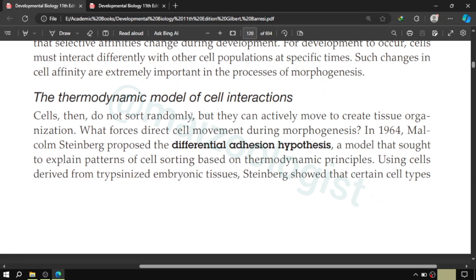What Steinberg did was that he used the cells derived from the trypsinized embryonic tissue, the embryonic tissue that has been treated with trypsin enzyme. So Steinberg showed that certain cell types